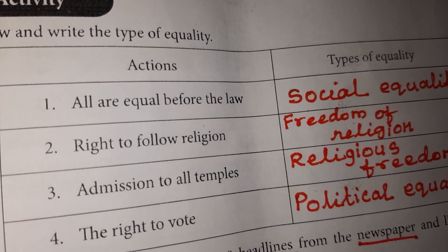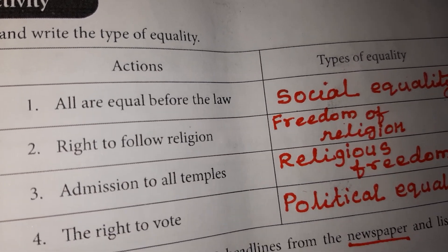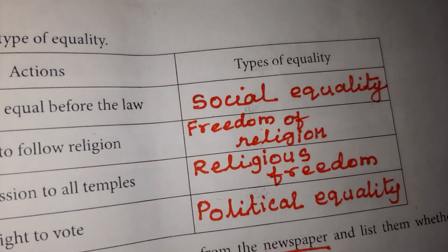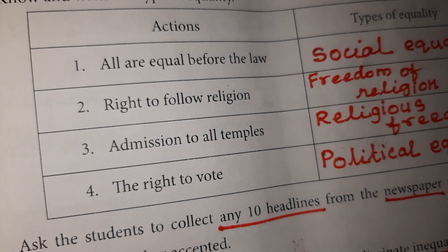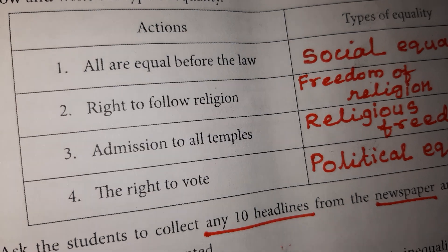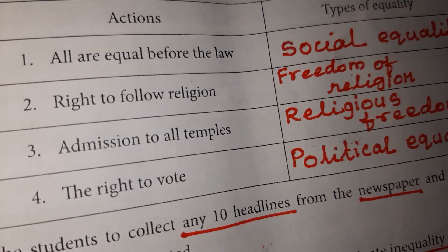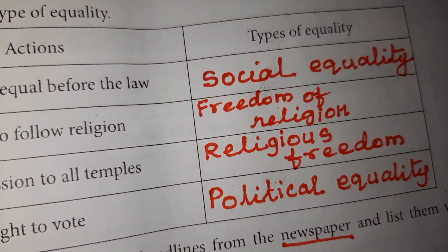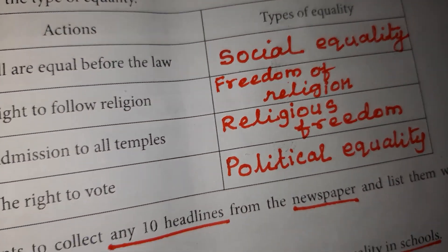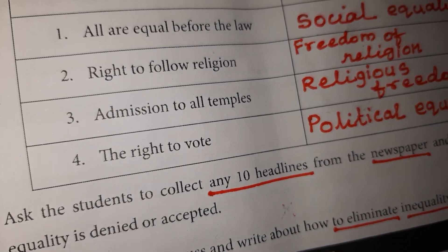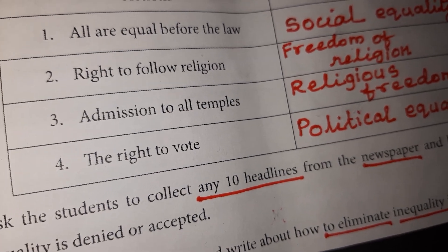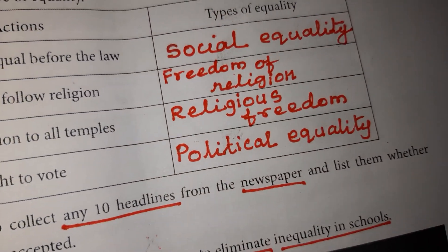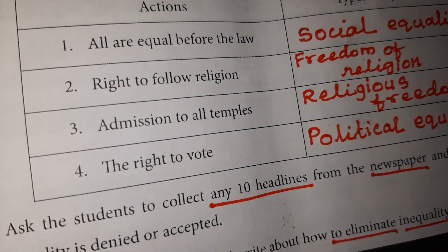The first one: all are equal before the law. The answer is social equality. The next one: right to follow religion. The answer is freedom of religion. Third one: admission to all temples. The answer is religious freedom.